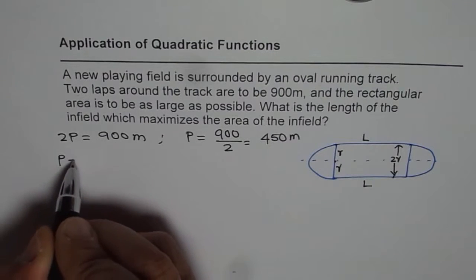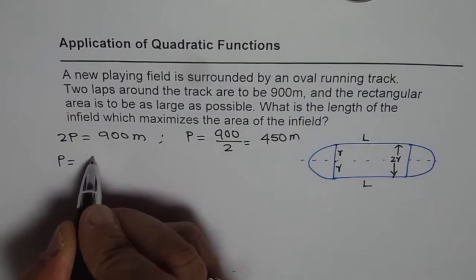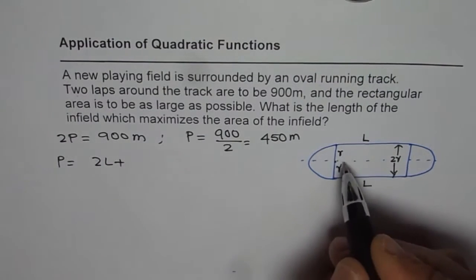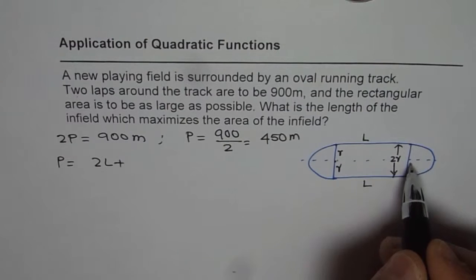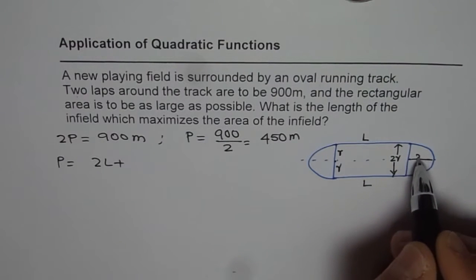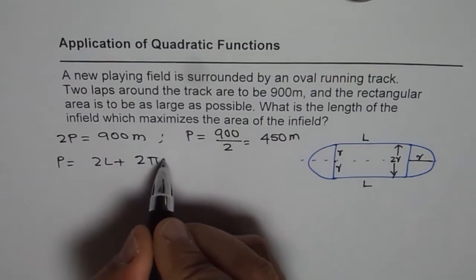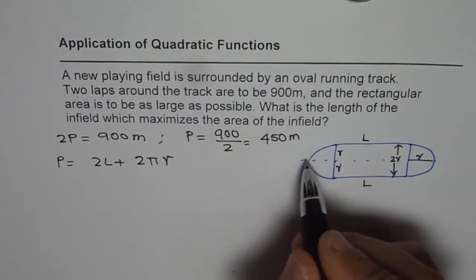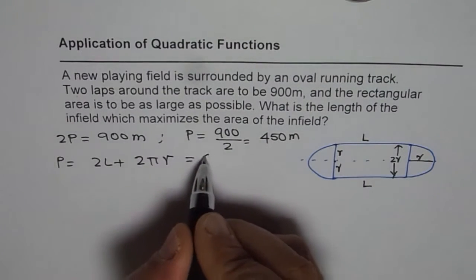So perimeter in this case is actually equals to 2L plus 2R plus 2πR. Do you see that? The radius is R here. So it is a full circle, so plus 2πR. So that gives us the complete perimeter. So perimeter which is equal to 450.